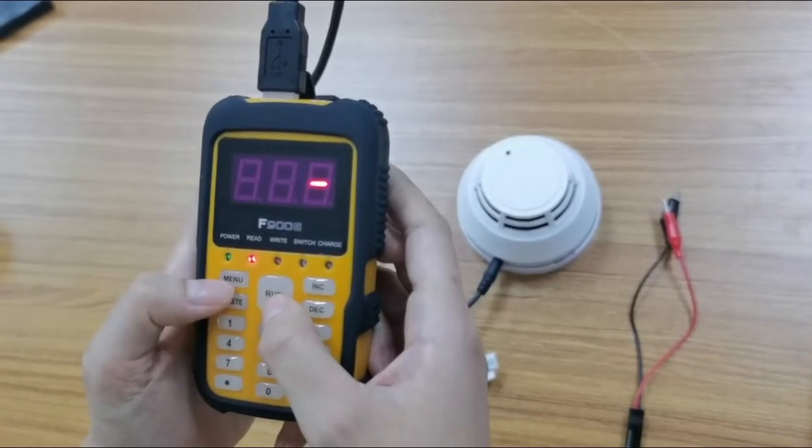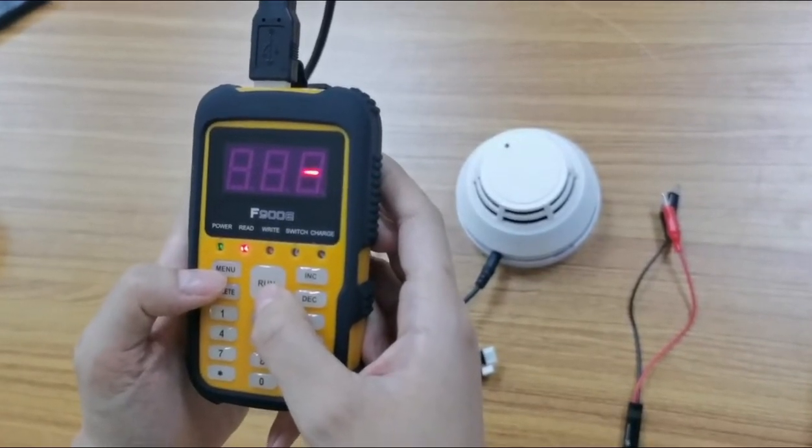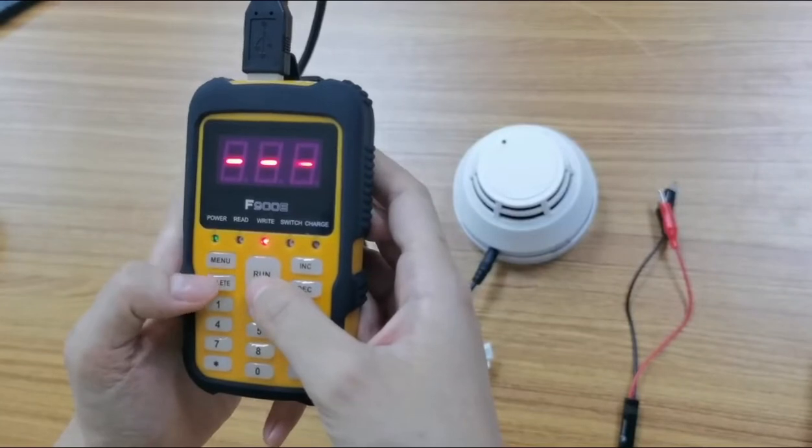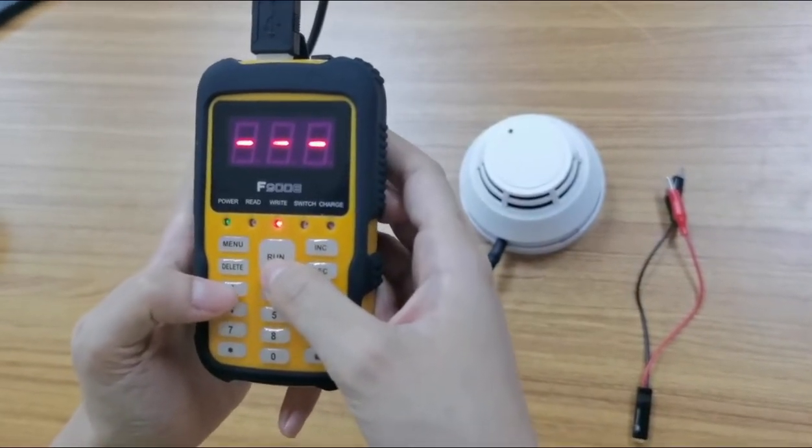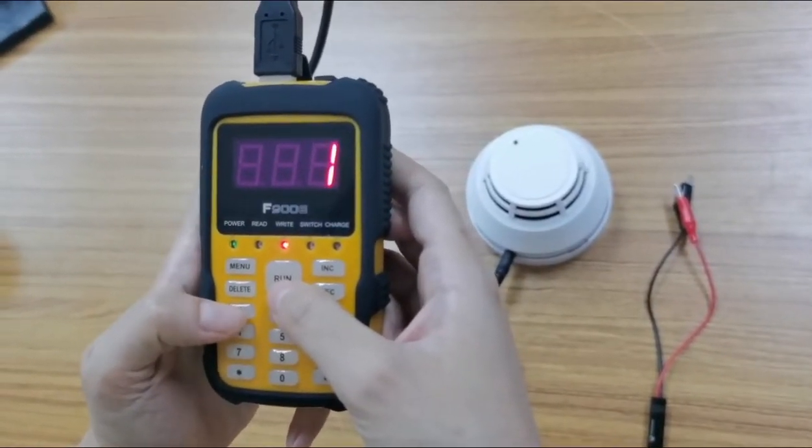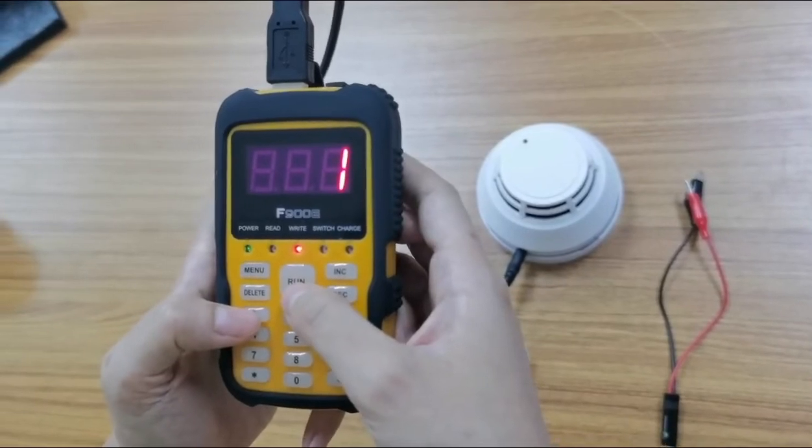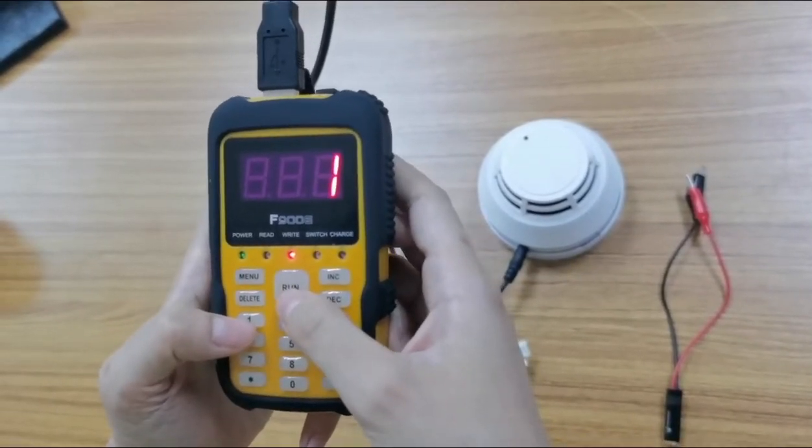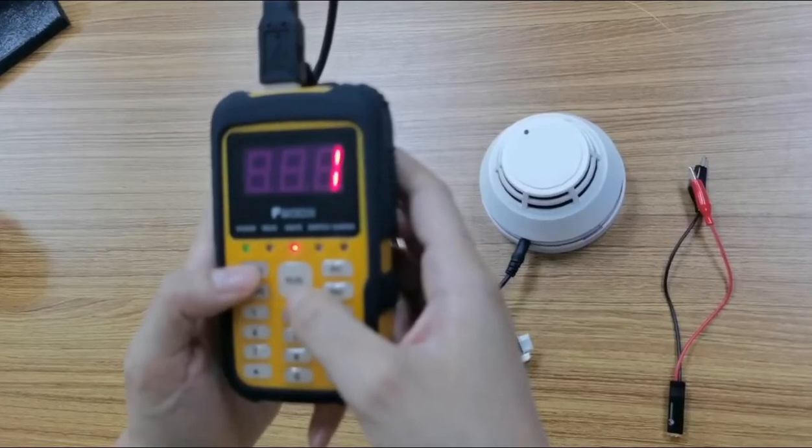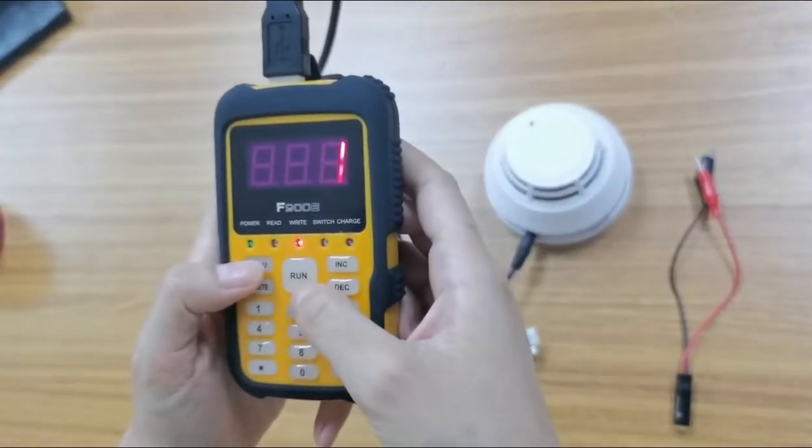Okay, the first step we need to select to program the address. We program the one to the device and run. Then we can read again the address.